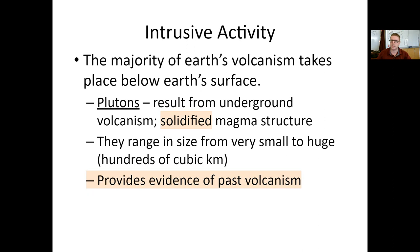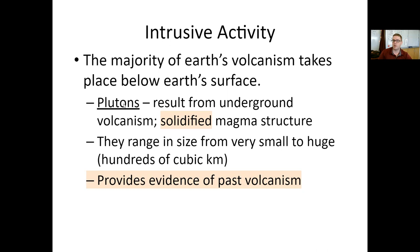The large majority of Earth's volcanism takes place below the Earth's surface. You and I, we see what happens when the volcano erupts — ash and gas coming out of the cloud, lava coming down the mountainside, pyroclastic flows, some projectile rocks, all that stuff. Deep inside the Earth is where we get the large majority of different types of features forming. And we call these different features plutons, as in plutonic. All of these features result from underground volcanism.